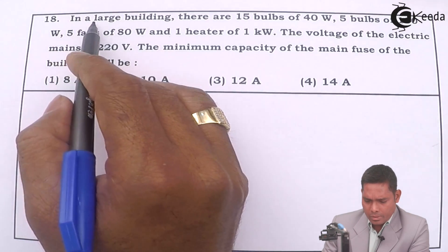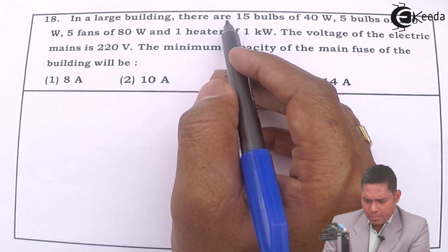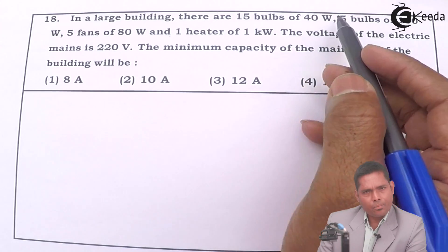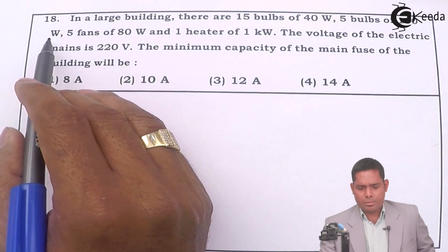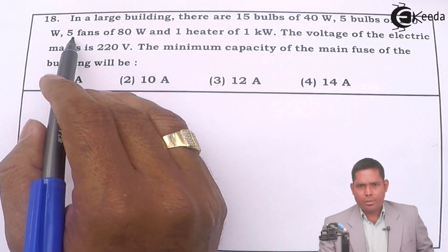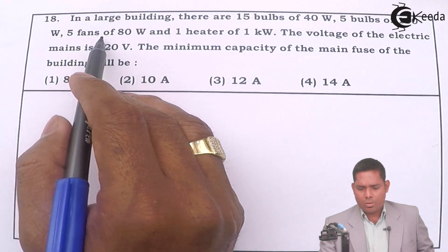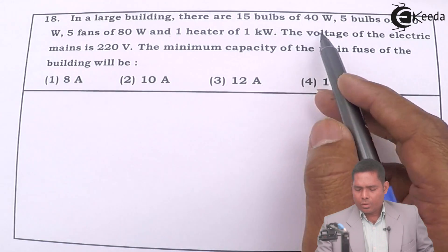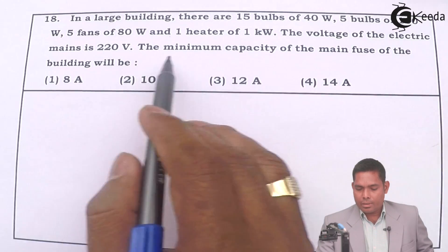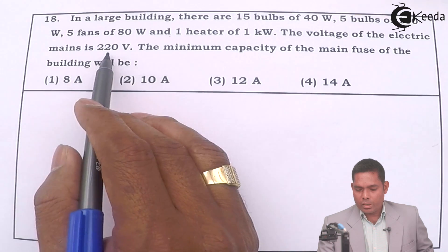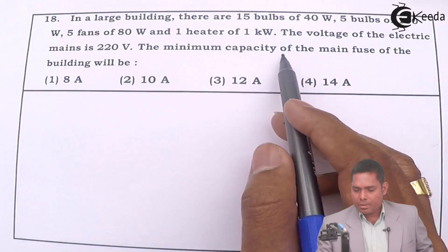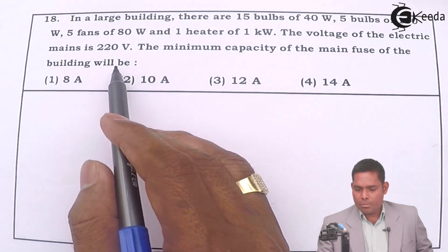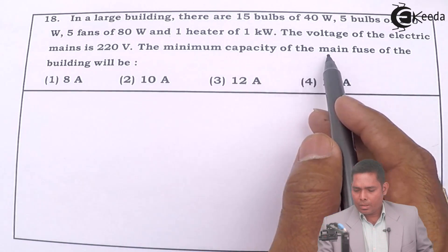The question is: in a large building, there are 15 bulbs of 40 watt each, 5 bulbs of 100 watt, 5 fans of 80 watt and a heater of 1 kilowatt. The voltage of the electric mains is 220 volt.